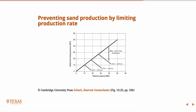Above this you won't produce anything. Only below this is where you're actually producing fluids, and these lines represent rock strength of different strengths — 1000 psi unconfined compressive strength, 1600 psi, and 1800 psi.